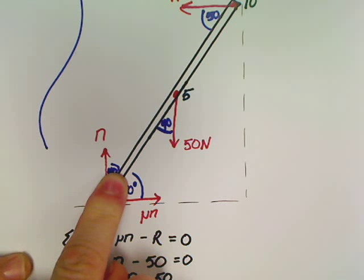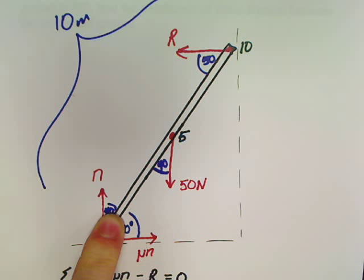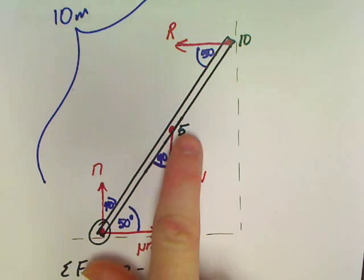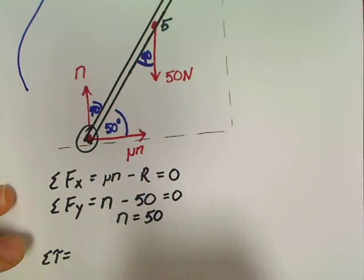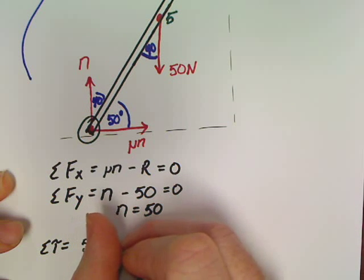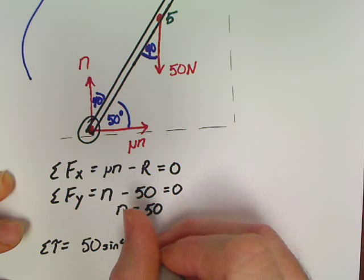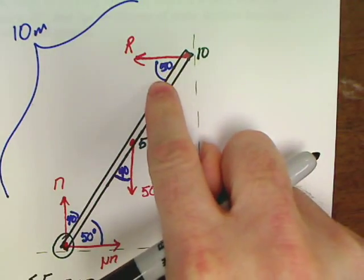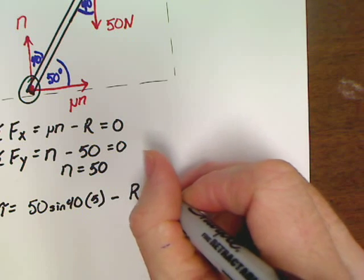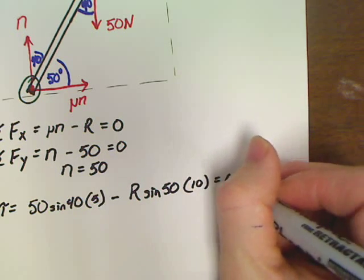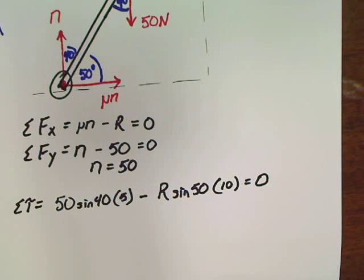Cancels out mu n and n from my torques. Now all I've got to do is look - there's only one clockwise, it's the 50, and one counterclockwise, it's the R. So I'm going to have 50 sine of 40 times 5 minus the counterclockwise, R sine 50 times 10. And bam, set that equal to 0. I'm done.